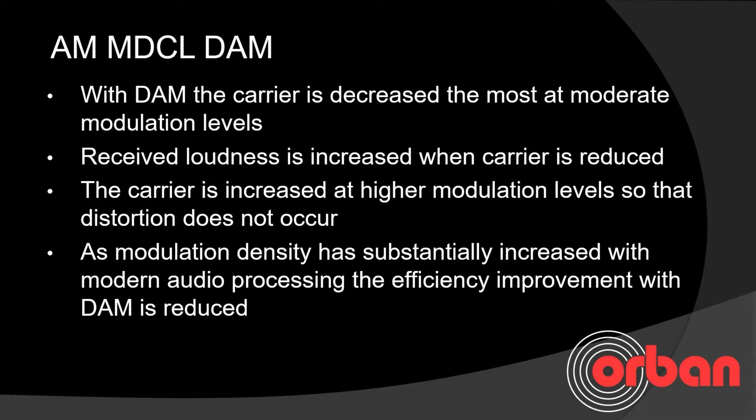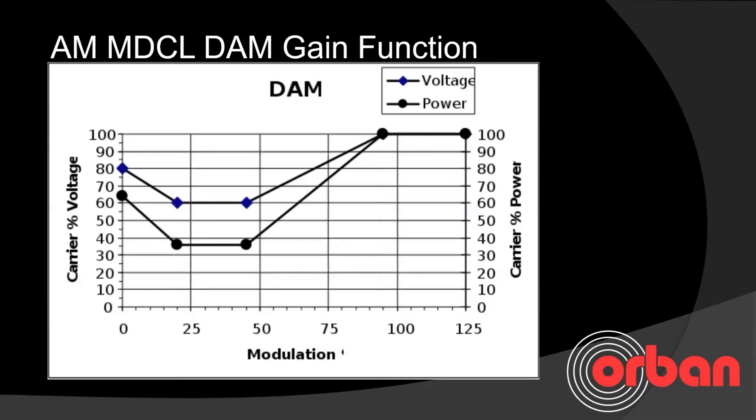With DAM, the carrier is decreased most at moderate modulation levels. Received loudness is increased when the carrier is reduced, which tends to be an artifact that most people don't really appreciate. The carrier is increased at higher modulation levels so distortion doesn't occur. As modulation density has substantially increased over the last 20 years with modern audio processing, the efficiency improvement with DAM is reduced.